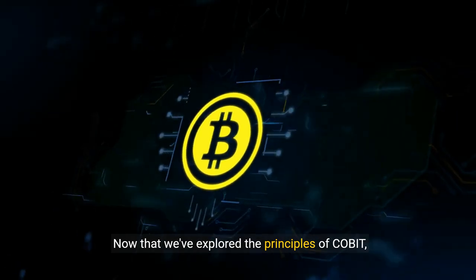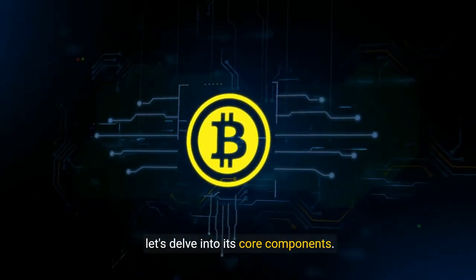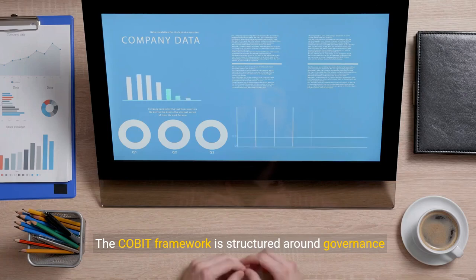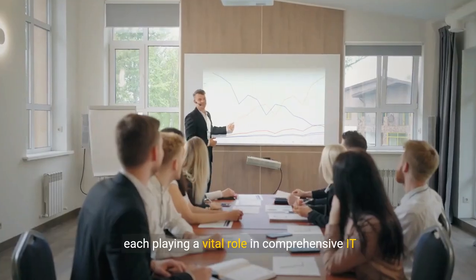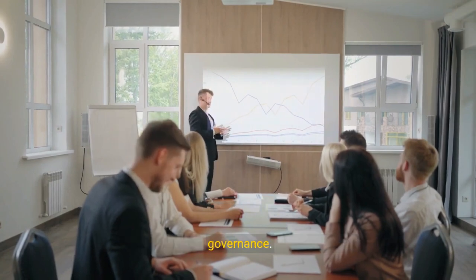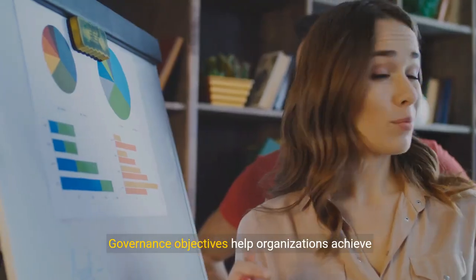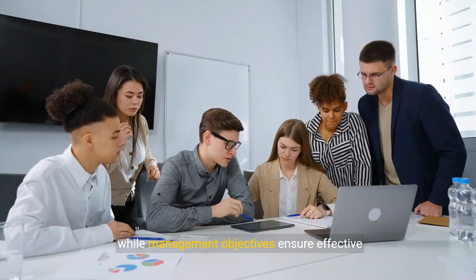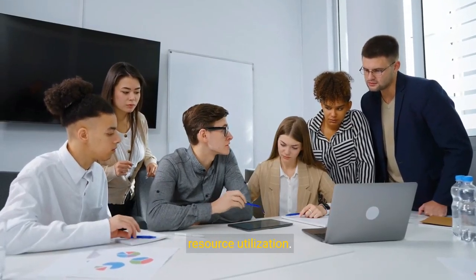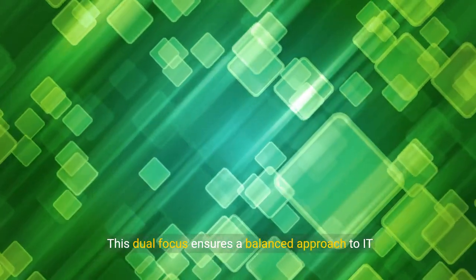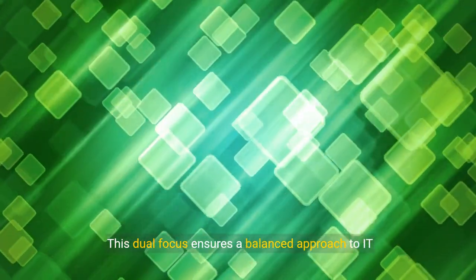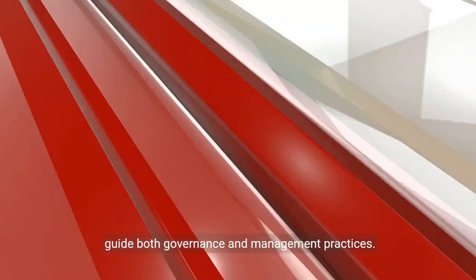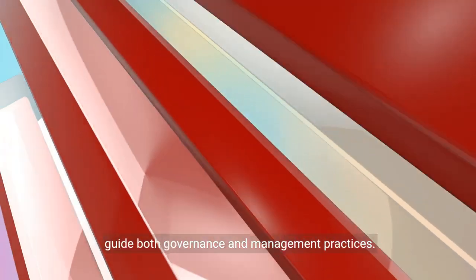Now that we've explored the principles of COBIT, let's delve into its core components. The COBIT framework is structured around governance and management objectives, each playing a vital role in comprehensive IT governance. Governance objectives help organizations achieve their strategic goals, while management objectives ensure effective resource utilization. This dual focus ensures a balanced approach to IT governance.